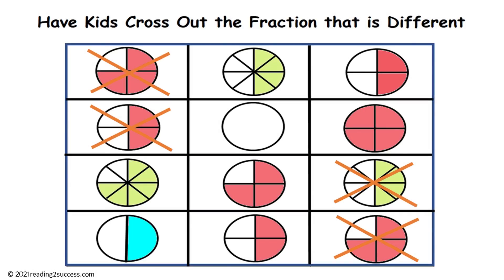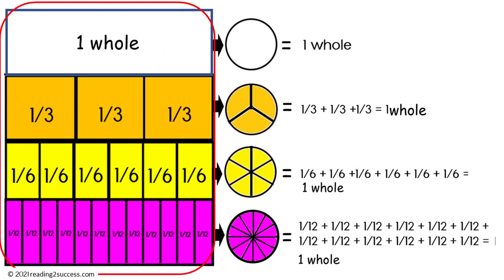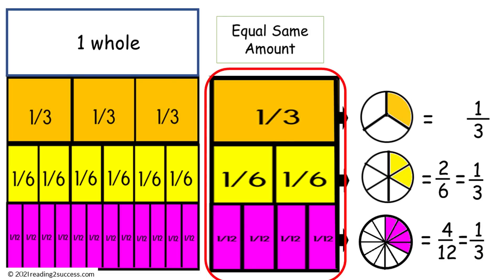This is a completed example. Now we are moving to part two to look at fractions with denominators of three, six, and twelve. This chart shows the equivalency of one whole: one-third plus one-third plus one-third equals one whole; six one-sixths equal one whole; and twelve one-twelfths equal one whole. This chart also shows that one-third, two-sixths, and four-twelfths all equal one-third and are equivalent fractions.